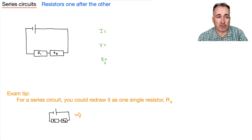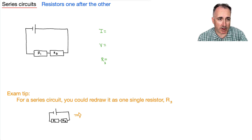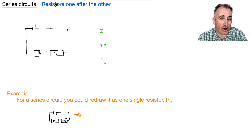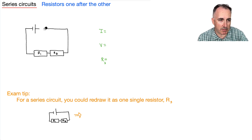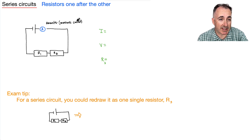I want to consider a type of circuit called a series circuit. I'll draw a regular circuit diagram here — this is the battery, and the conventional current is going to go this way. It's called series because the resistors are one after the other. I need to imagine some detectors, so for example, maybe I put an ammeter right here. That ammeter is going to measure the total current at the battery.